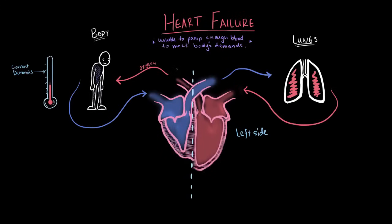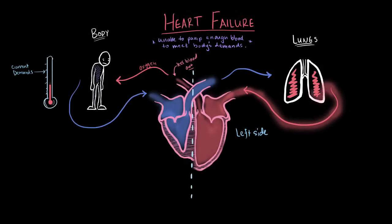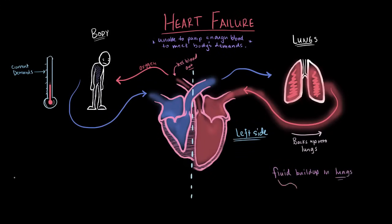Since the left side pumps blood out to the body, blood is coming in from the lungs. If it's not pumping efficiently to the body, that blood starts to get backed up into the lungs — like a traffic jam where a lane closes and only one car gets through at a time. A really common symptom of left-sided heart failure is fluid buildup in the lungs, called congestion, which is also why we sometimes say congestive heart failure.